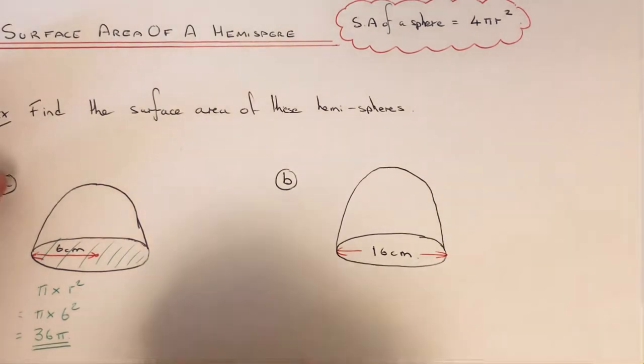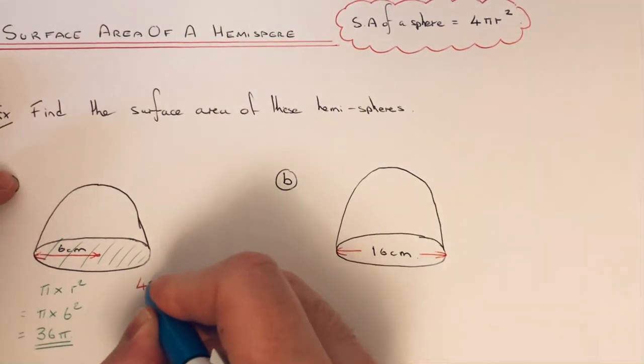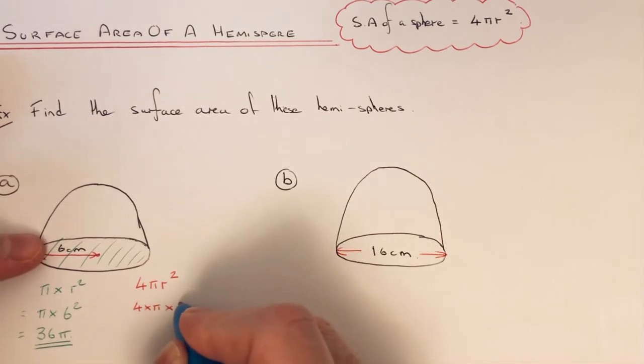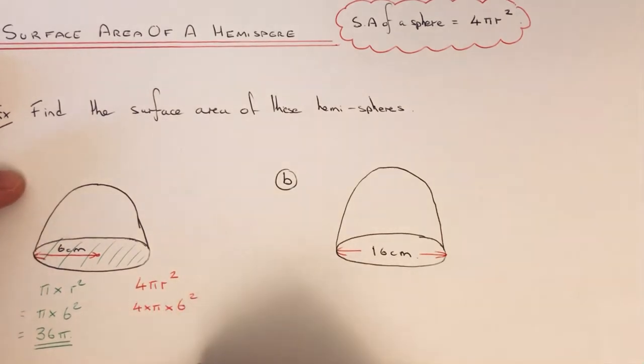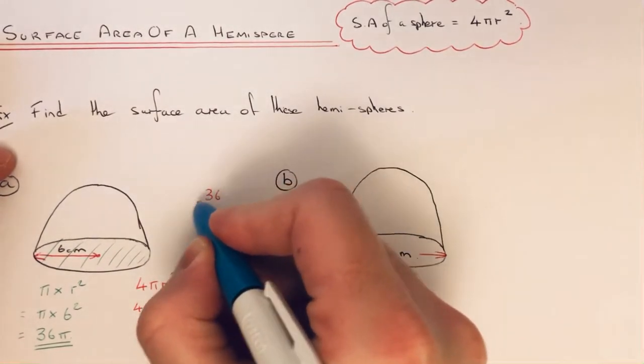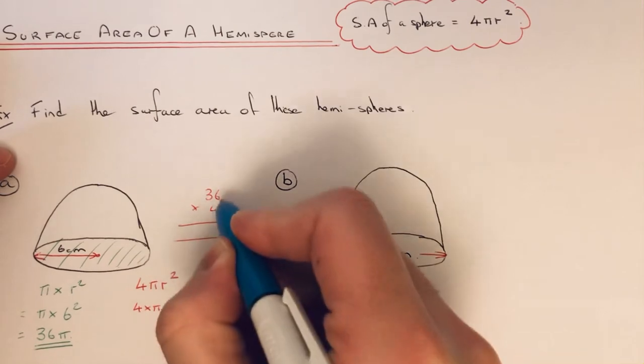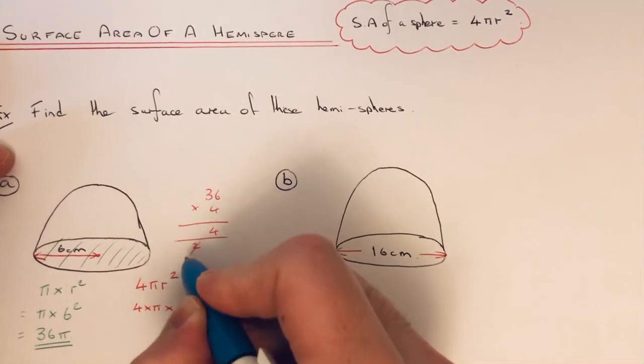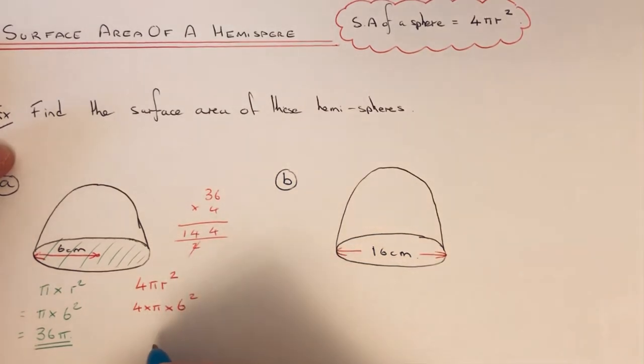So if we do 4πr², if we substitute the radius, it would be 4 times π times 6². 6² is 36, and then we've got to times that by 4. So 6 times 4 is 24, 3 times 4 is 12, plus the 2 is 14. So we get 144π.